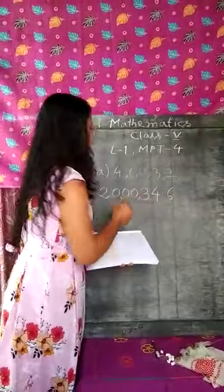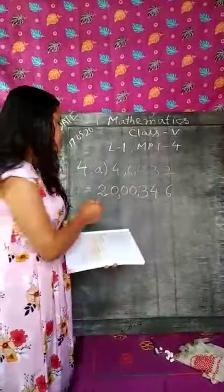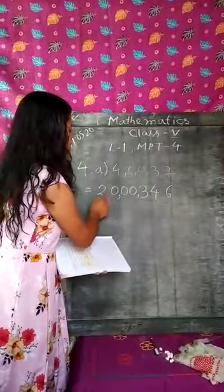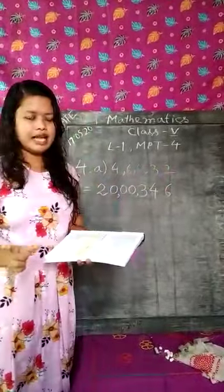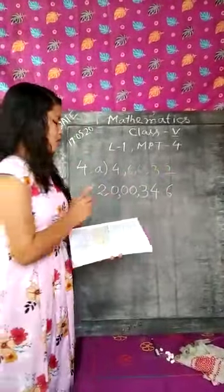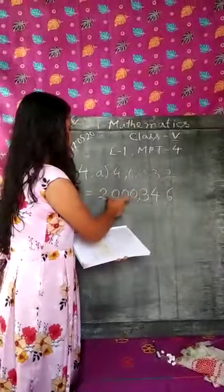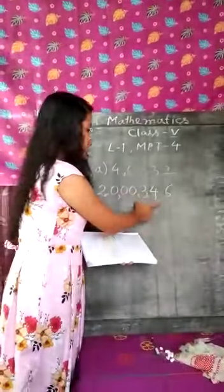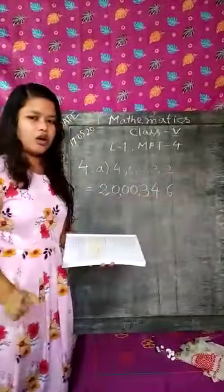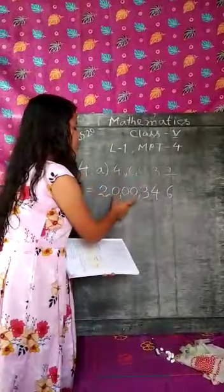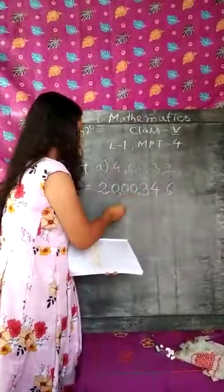Counting the digits: that gives us 7 digits total. So the smallest 7 digit number is 20,00,346. Since 0 is there, we are writing 0 at the second position.